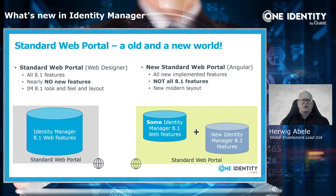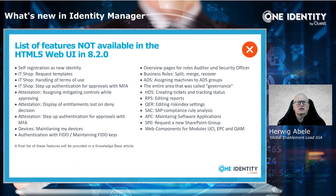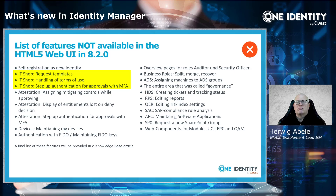It is necessary to look into the details to figure out what is the best portal for you. Looking at features not available in the 8.2 world: first, the self-registration portal is not available as an Angular-based version, though you can easily use the Web Designer version which is also shipped on the DVD. Secondly, some IT shop features are not available — mainly request templates, handling of terms of use that must be agreed to before requesting, and step-up authentication for approvals with multi-factor authentication.